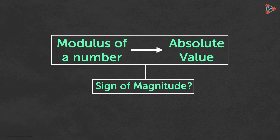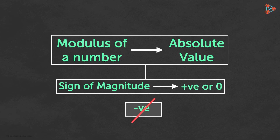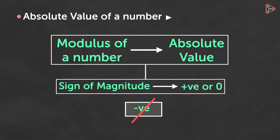What sign can the magnitude of a number take? The magnitude of a number can be either positive or zero — it can never be negative. That's the reason why we say that the absolute value of a number is always non-negative. We will be applying this concept to understand the modulus function.